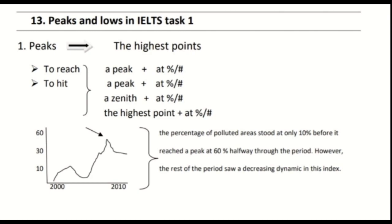Let's talk first about peaks. Peaks are the highest points in a line graph. There are some expressions you can use to describe peaks: 'to reach a peak at [percentage/number]', 'to hit a peak at [percentage/number]', 'to reach/hit a zenith at [percentage/number]', and lastly 'to reach/hit the highest point at [percentage/number]'. With those expressions in mind, let's take a look at the example provided.